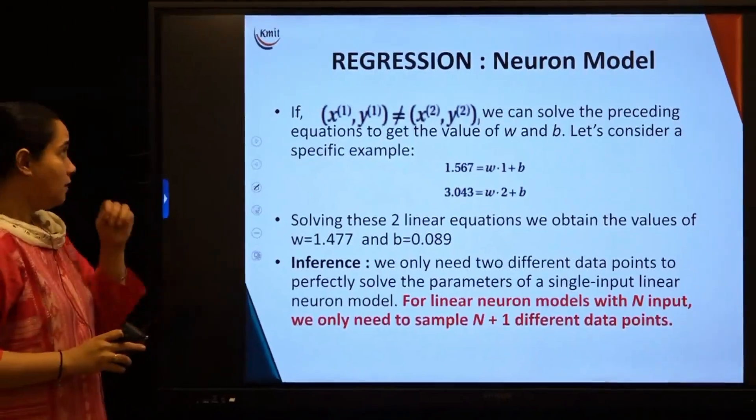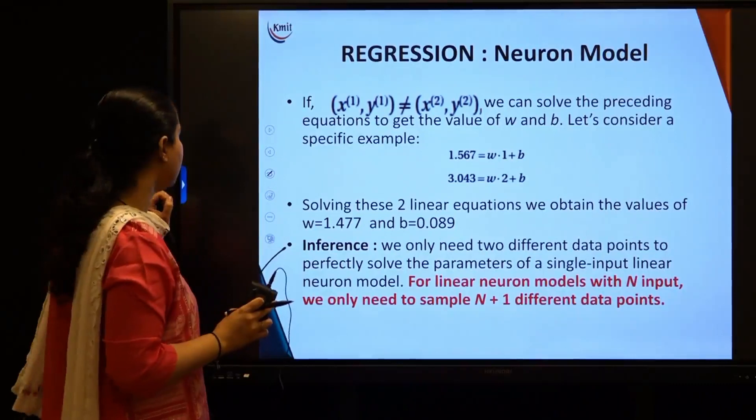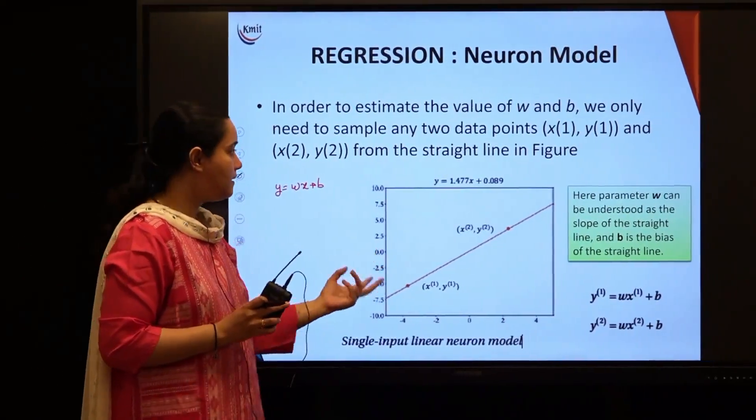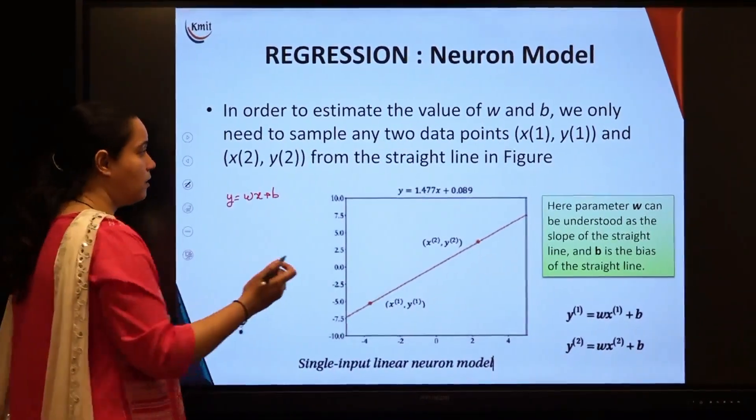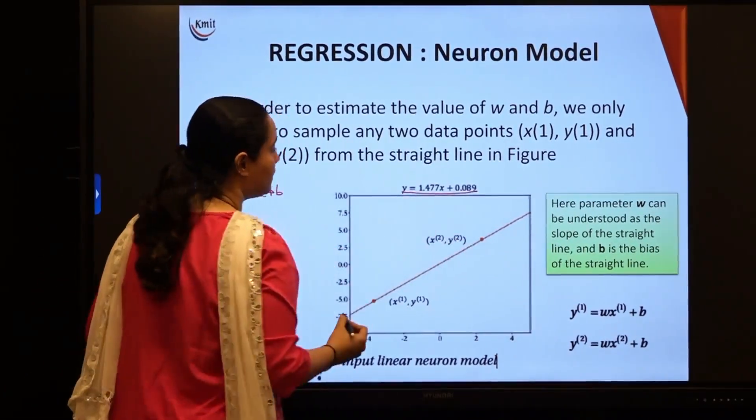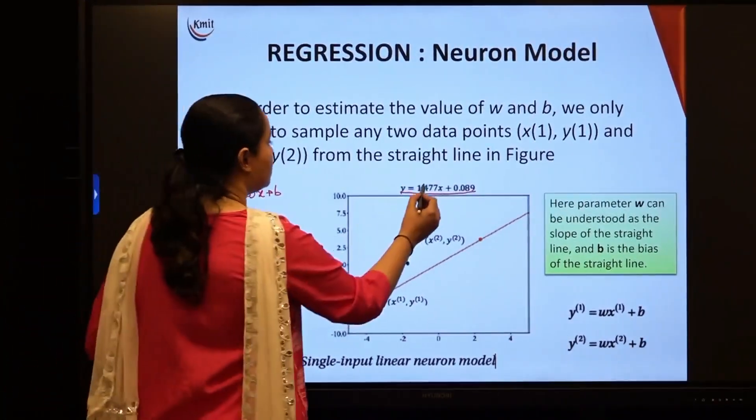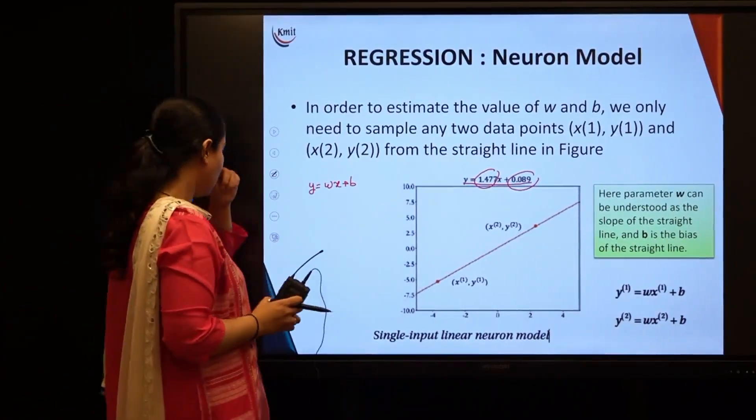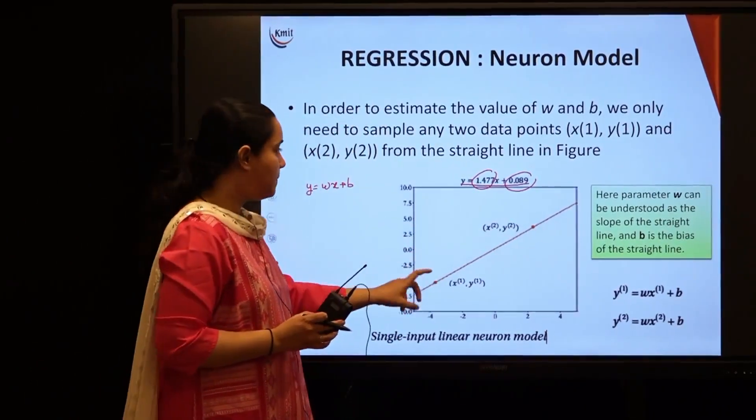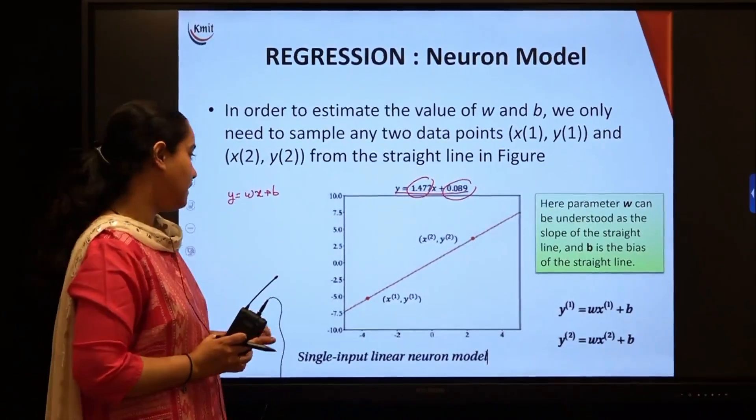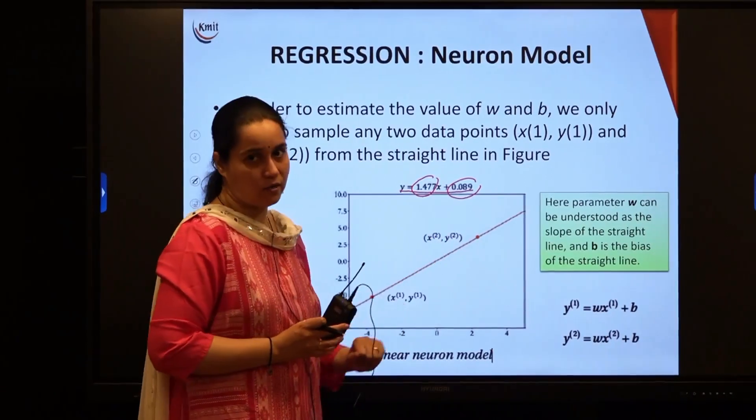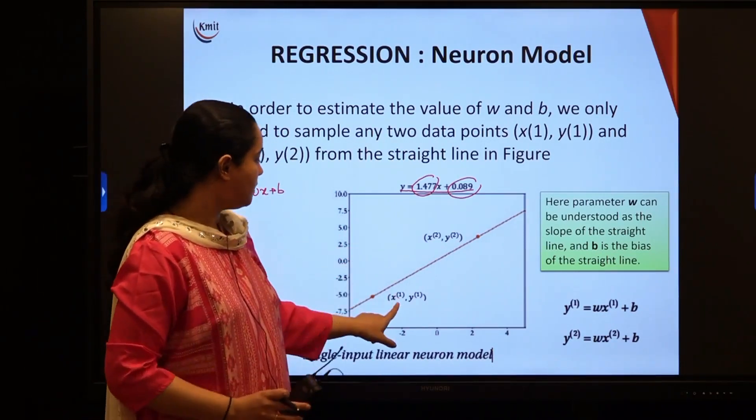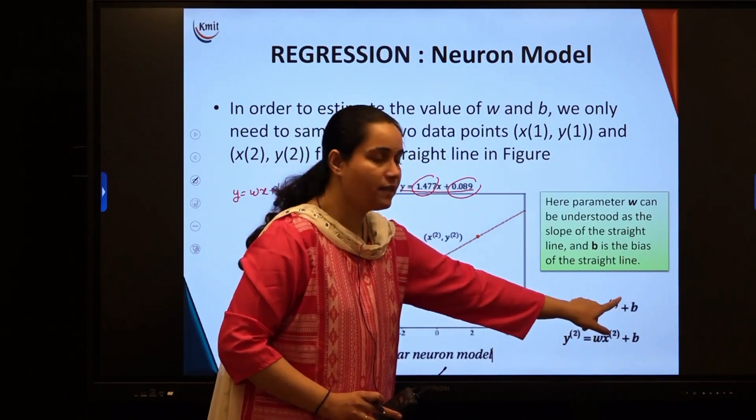If we can solve these preceding equations: I have preferred to take an equation of y equals 1.477x plus 0.089. That means my suggested weight here is this value and bias here is this particular value. Then if I get this straight line and I pick up two points on this straight line, I call them x1, y1, x2, y2.